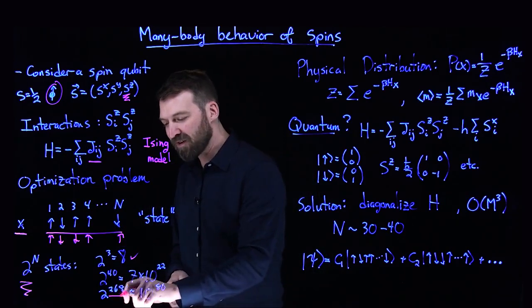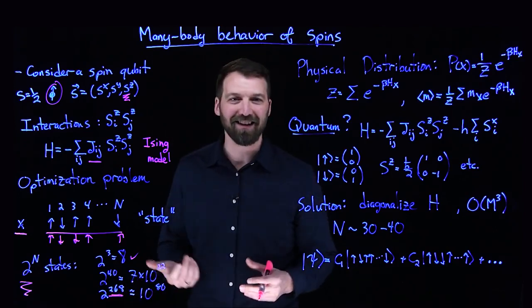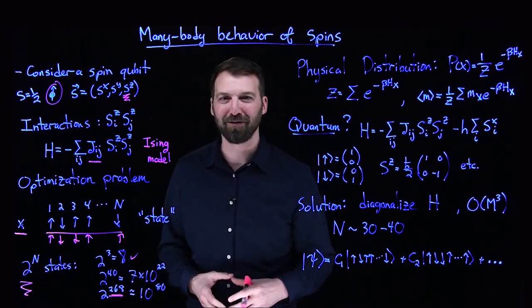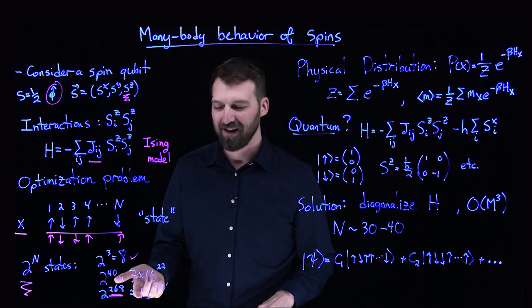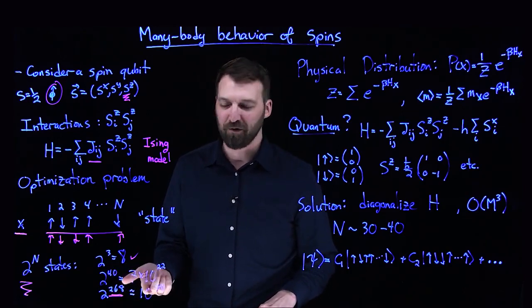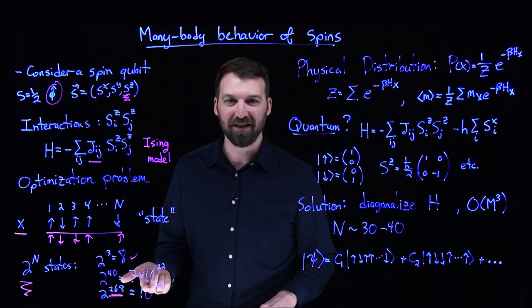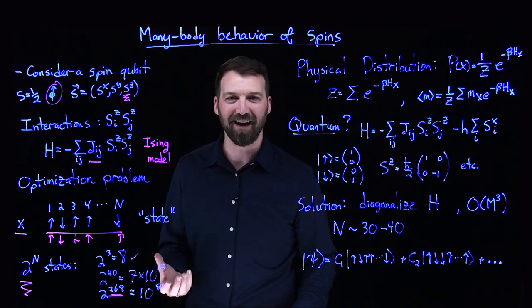When I get up to a number as small as 268—just a couple hundred spins—that number balloons up to 10^80. The reason I chose 10^80 is this is the number of all particles in the known universe.